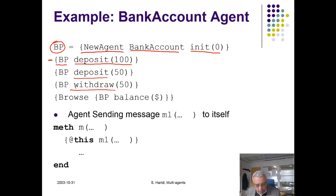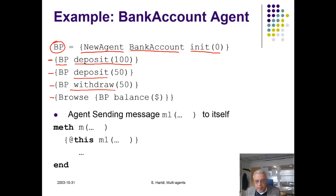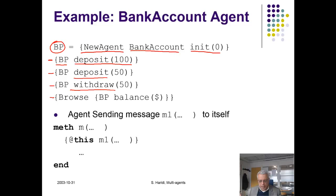If you run this — deposit, then send another deposit, then send a withdraw, then ask for the balance — you should expect to get a balance of one hundred. The syntax is exactly the same as before, except the semantics is different. This activity has its own thread and is actually receiving messages and invoking behaviors when it receives them.